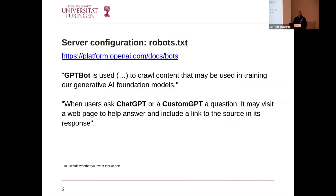So what can we do about this? From the details of the bots, you can usually see in the user agent what each user agent is about. For example, for the OpenAI-related user agents, you can see in the documentation that the GPT Bot is explicitly used to crawl content that may be used in training the generative AI foundation models, whereas the ChatGPT or custom GPT bots may visit a web page to help answer a question and include a link to the source in its response.